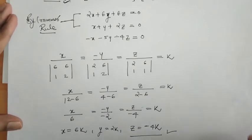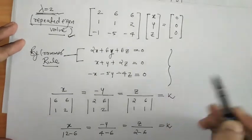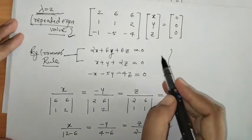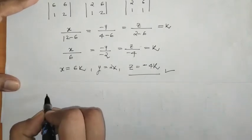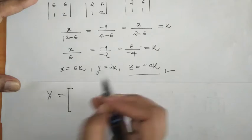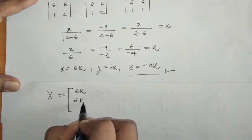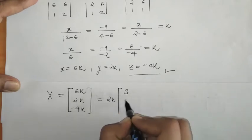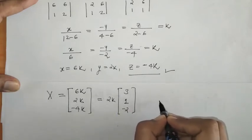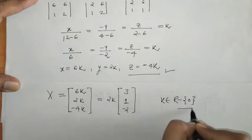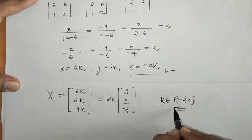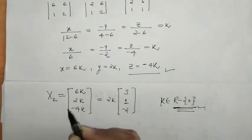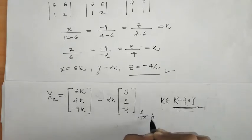Solving the system of equations for xyz, we verify that putting these values makes the LHS equal to RHS. Taking 2k as a common factor, we get the eigenvector as [3, 1, −2]. This is eigenvector X2 for λ = 2. Since λ = 2 is a repeated eigenvalue, we need two independent eigenvectors, so we put λ = 2 in the matrix equation again.